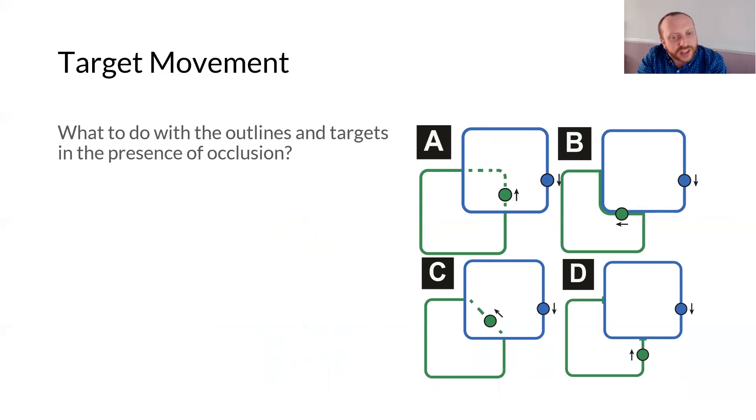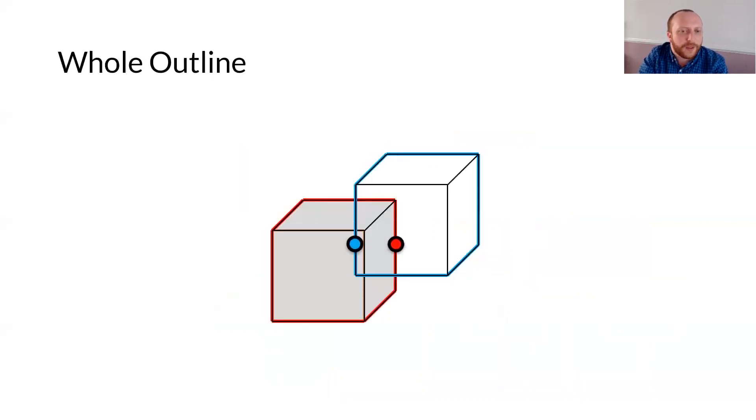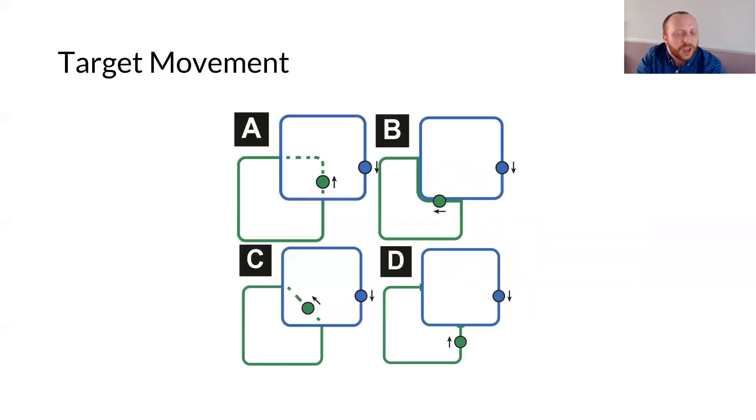We also have to carefully consider how to present outlines and target movements in the presence of occlusion, and for this we looked at four different variants. Whole outline, where the entire outline is visible, even under occlusion. Shared outline, where the target moves along the visible part of the object. Cut outline, where the target moves along the shortest path to the next visible part. And finally, jump outline, where the target jumps to the next visible part. A user study with 16 participants revealed that performance and usability ratings were consistent across the different outlines. This indicates that designers can freely choose an outline that fits their application without risking major performance penalties. We chose to continue with the whole outline as this is the only variant which can be used for selection under full occlusion.